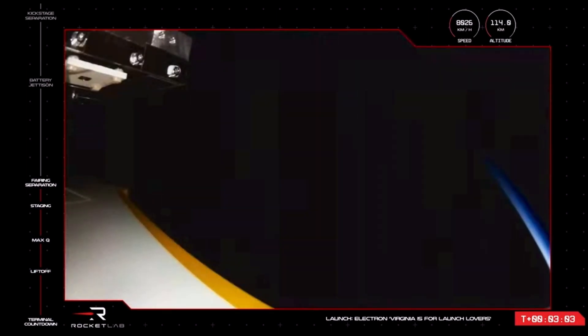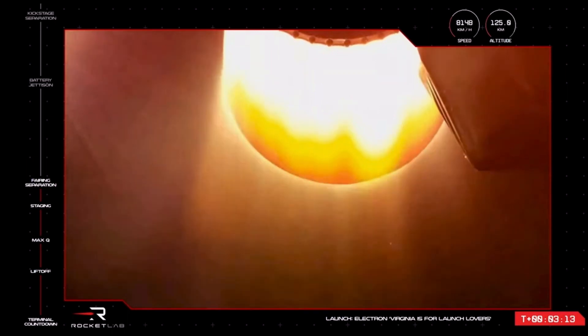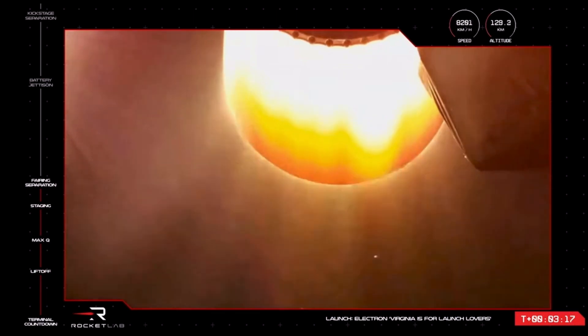Fairing jettison succeeded. And as we saw from Electron's onboard camera and heard from mission control, the rocket's fairing has successfully separated and fallen away, exposing the Hawkeye 360 satellites to space on their way to low Earth orbit. Our first launch from US soil is going great so far.